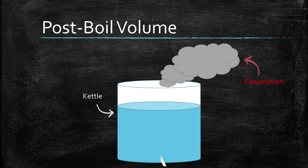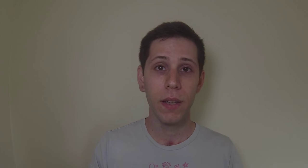Now that we have our batch size and trub loss, we move on to the post-boil volume. The post-boil volume is the amount of liquid left in the kettle at the end of the boil. This also takes into account kettle loss or dead space in your kettle. In our example, we put 20 liters into the fermenter, but if we had 21 or 22 liters at the end of the boil in our kettle, that would mean one to two liters of kettle loss — whatever we left behind.